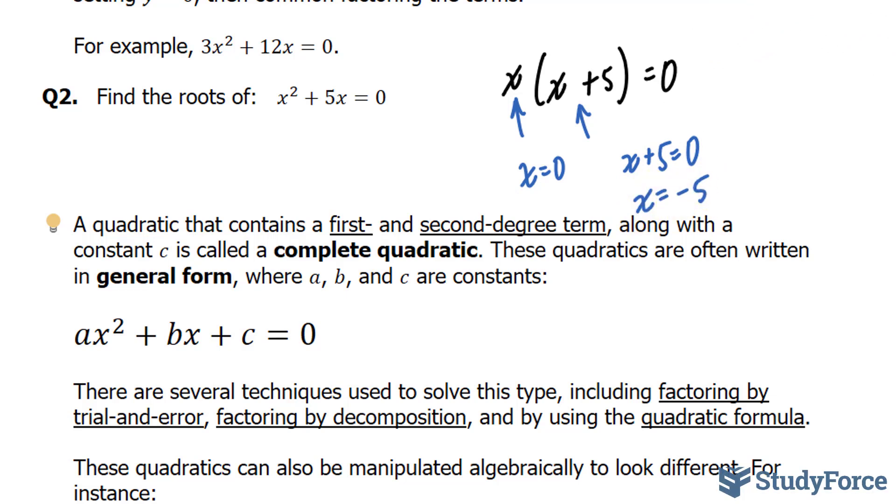Now many students commonly make the mistake of bringing this term over and then they have an equation that looks like this: x squared is equal to negative 5x. Once they get to this stage, they then cancel out this x with one of these and say that the only solution is 5.